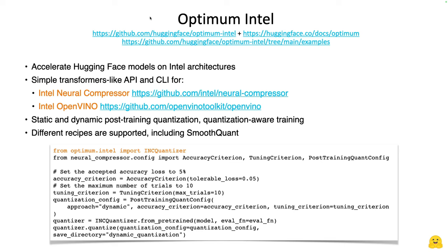Here's a code sample that is really close to what you would do with vanilla Transformers. This is an example of dynamic post-training quantization where you can set a maximum threshold for accuracy degradation, set the number of trials so the algorithm can try different settings, and even provide an evaluation function to help the algorithm pick the best compromise. You don't need to understand all the finer points of the quantization techniques — the pre-existing recipes are pretty cool. If you're looking to optimize for Intel platforms, this is a really good way to do it.